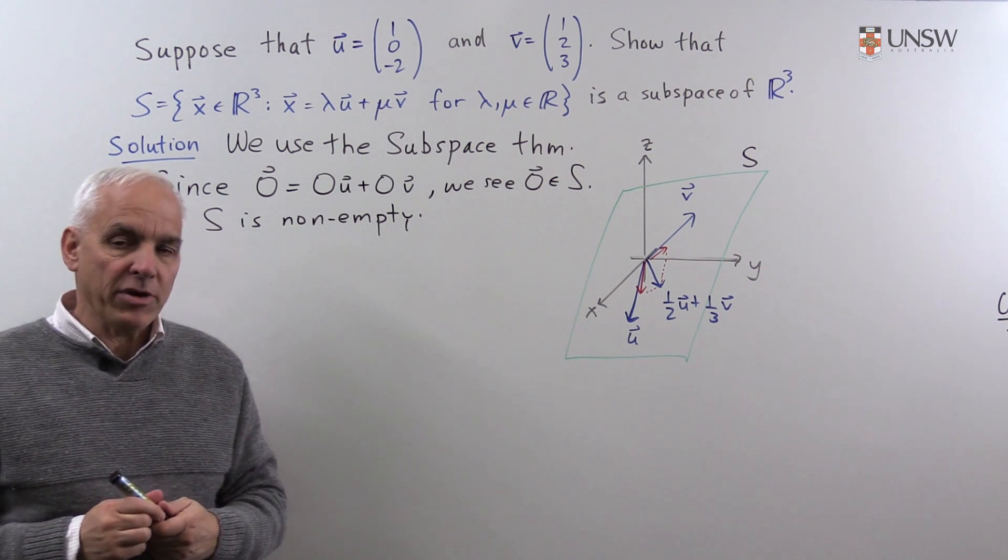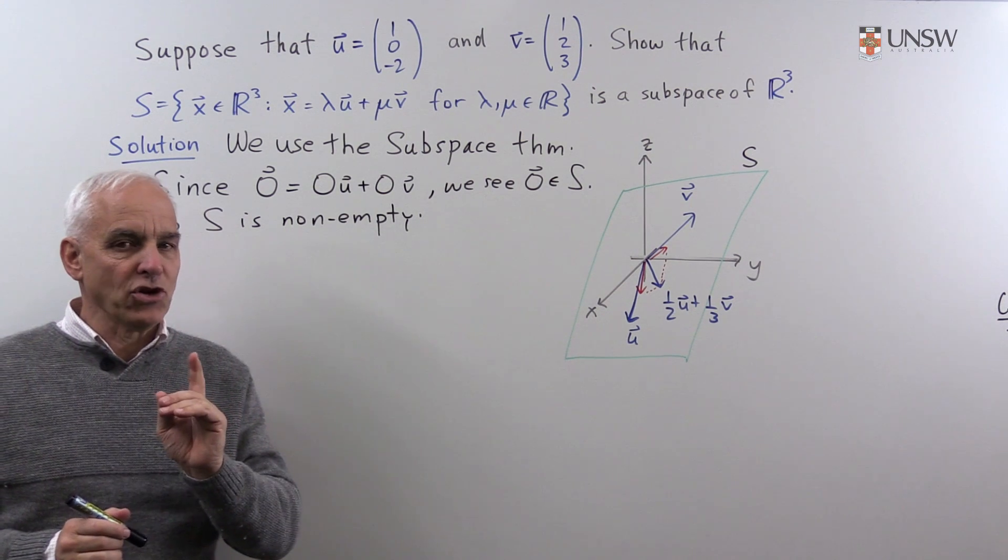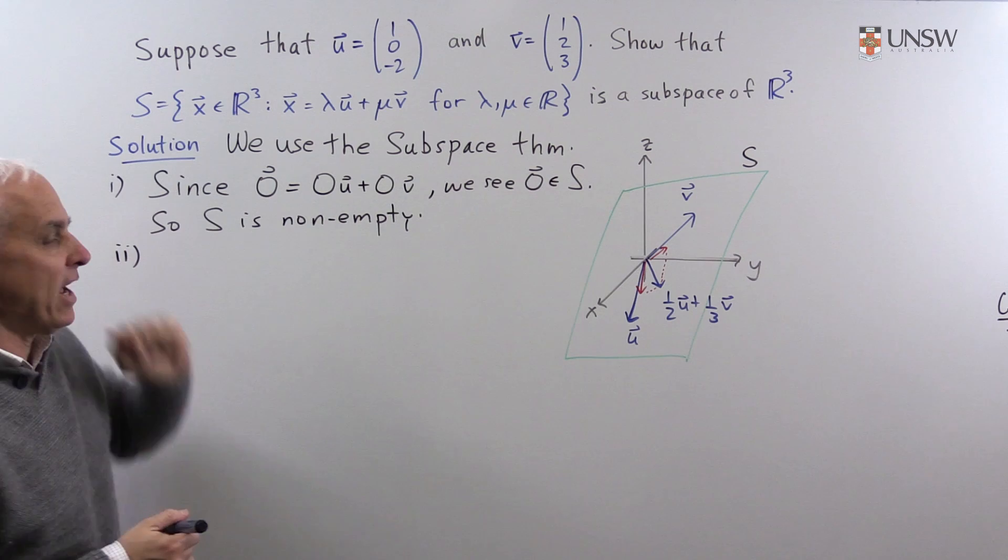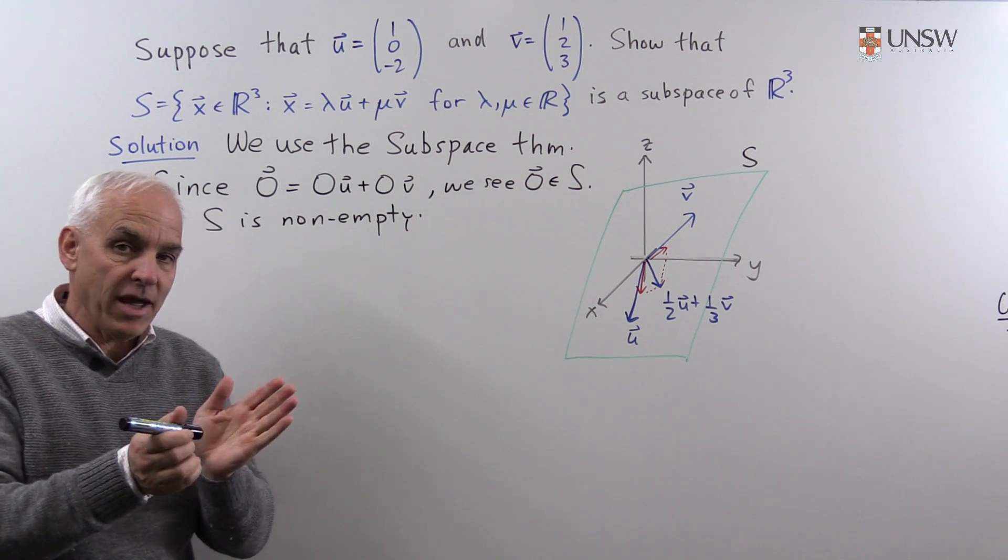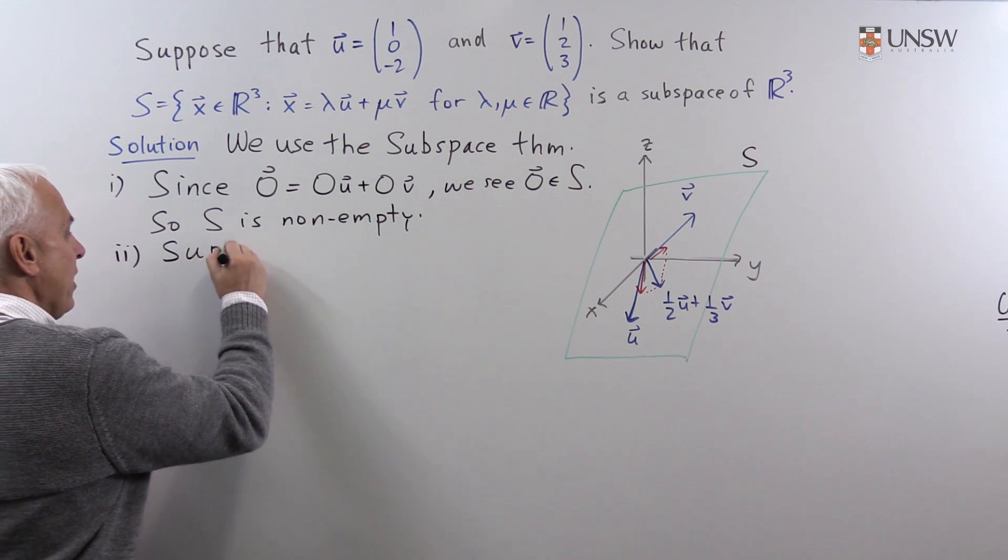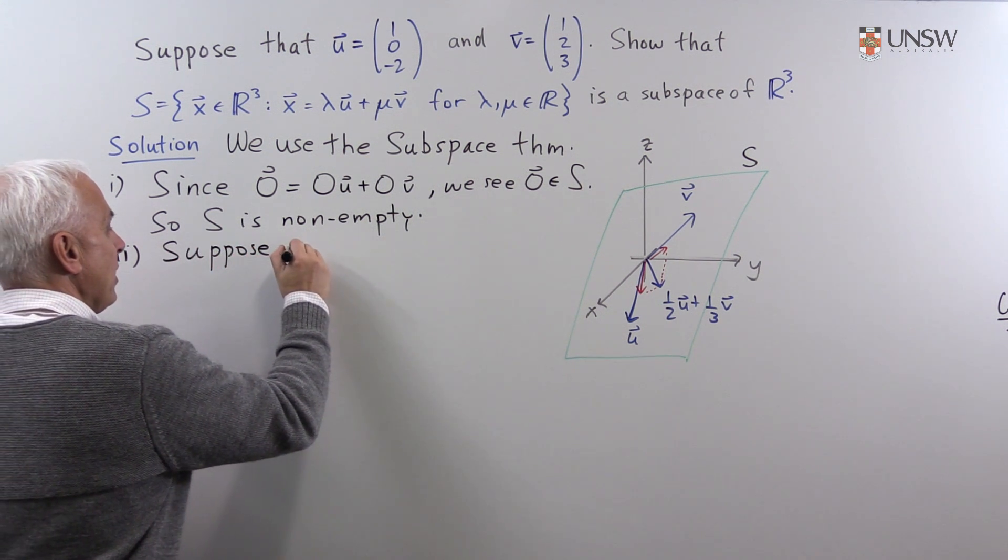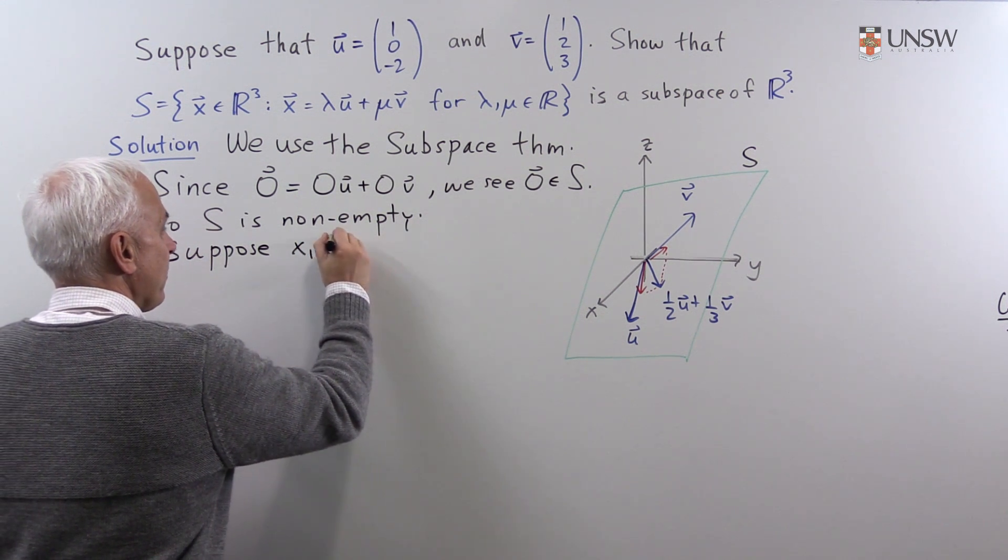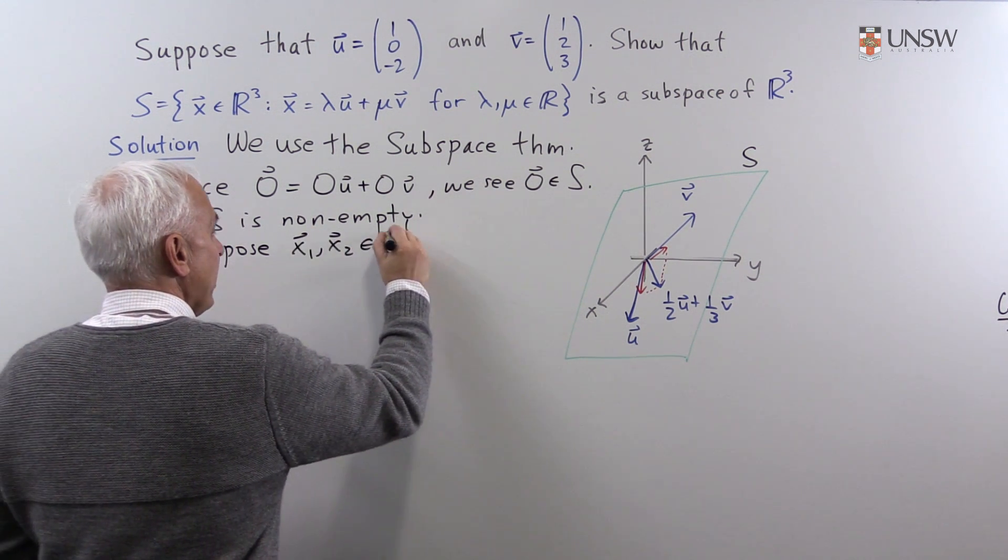For the second property, we need to show that S is closed under addition. So for that, we need to take two vectors in S and add them and see that the result is still in S. So suppose that x₁ and x₂ are both in S.